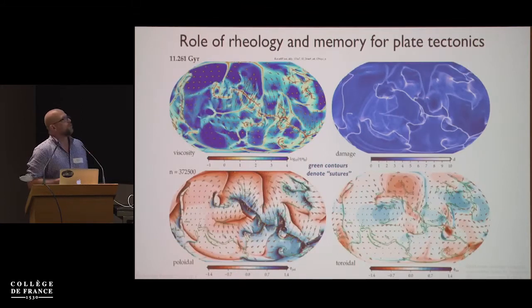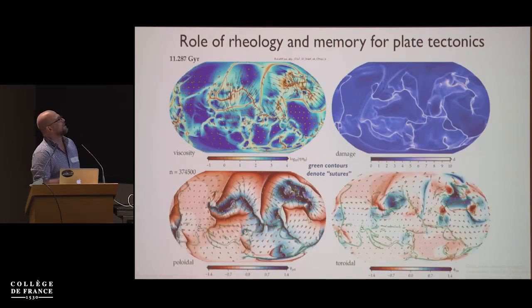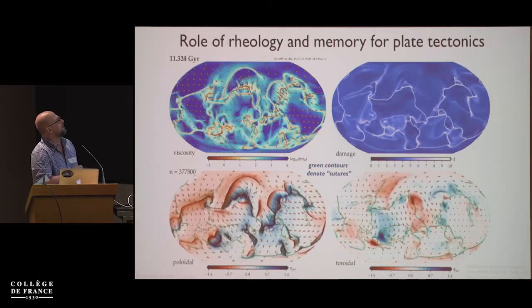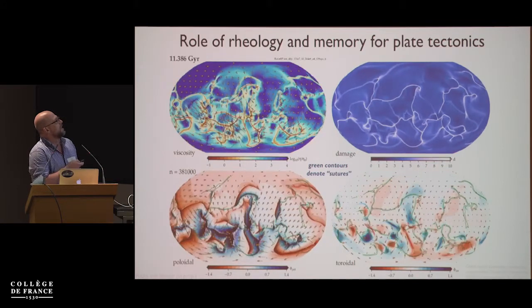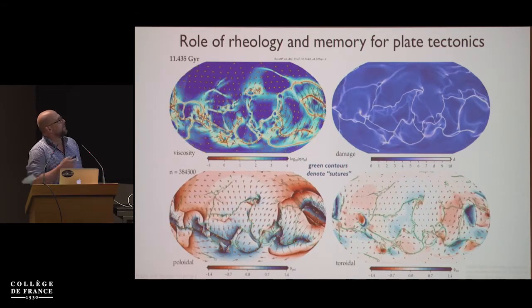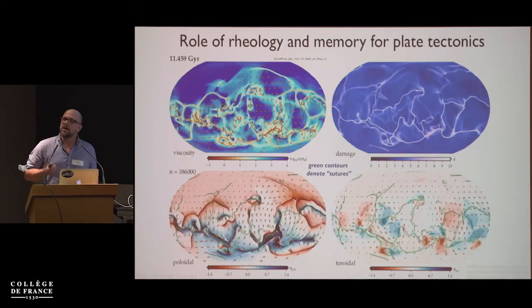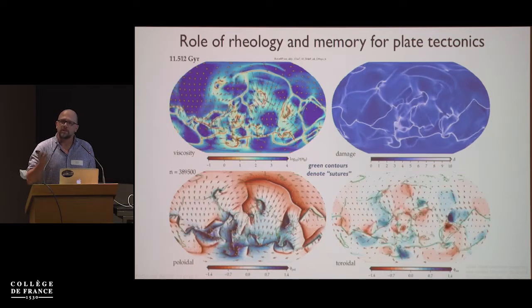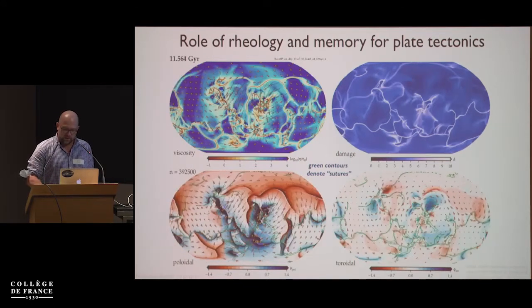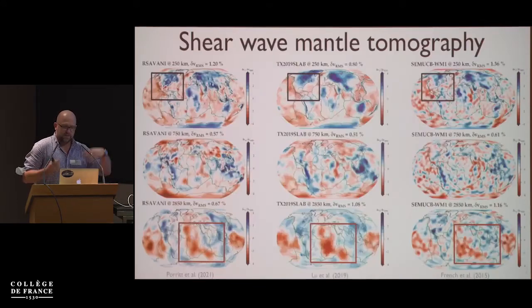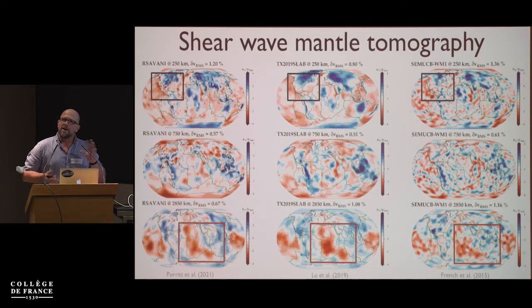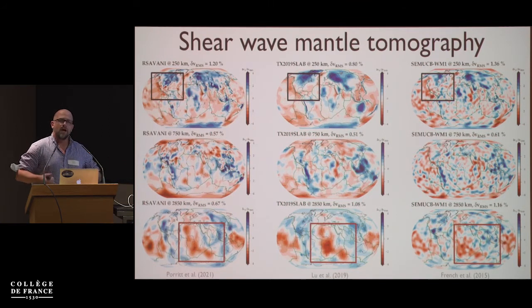Rheology is hugely important. For example, as Paul pointed out 20 years ago in Cartesian models, the degree of localization underneath spreading centers depends on the viscosity underneath there. And so we're trying to get at this problem of what controls planetary evolution, both from an applied perspective of what the Earth looks like right now, from a long-term evolution standpoint, and from a discovery kind of point of view.